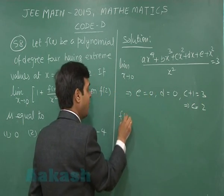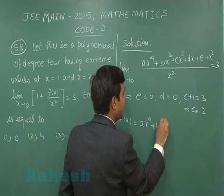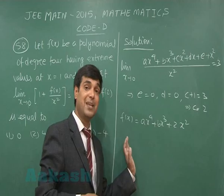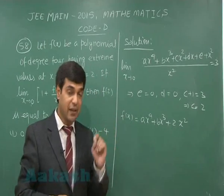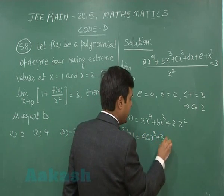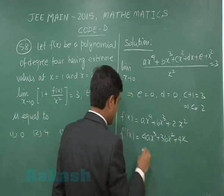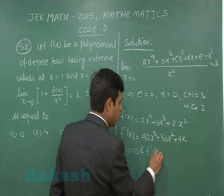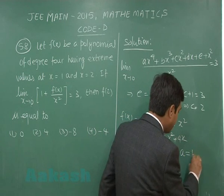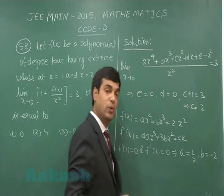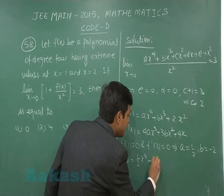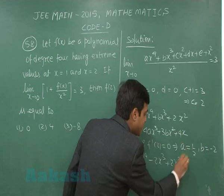We are left with the polynomial f(x) = ax⁴ + bx³ + 2x². The question says it has extremes at x = 1 and x = 2, meaning the derivative is 0 at these two points. f′(x) = 4ax³ + 3bx² + 4x, so f′(1) = 0 and f′(2) = 0. Solving these two equations, we obtain a = 1/2 and b = −2.